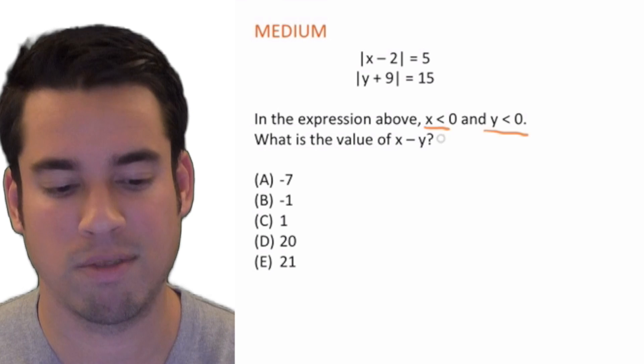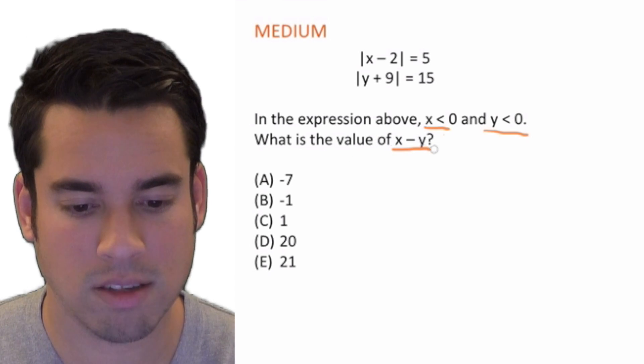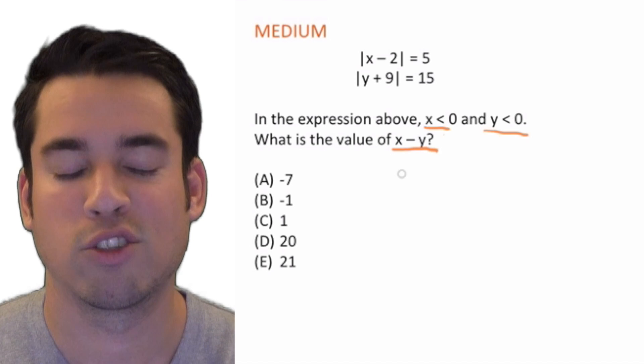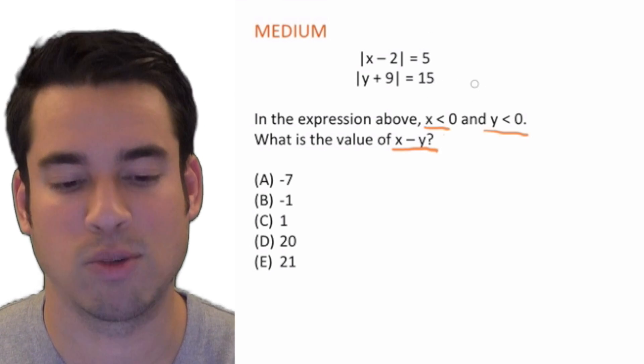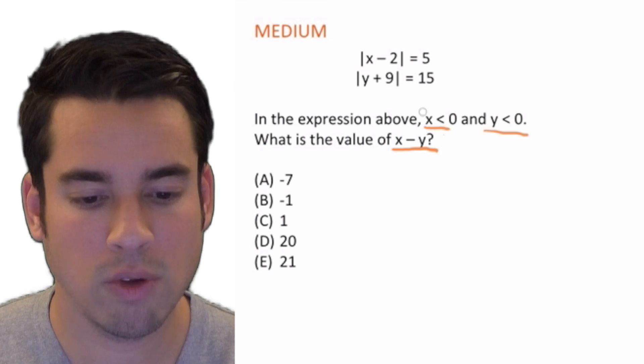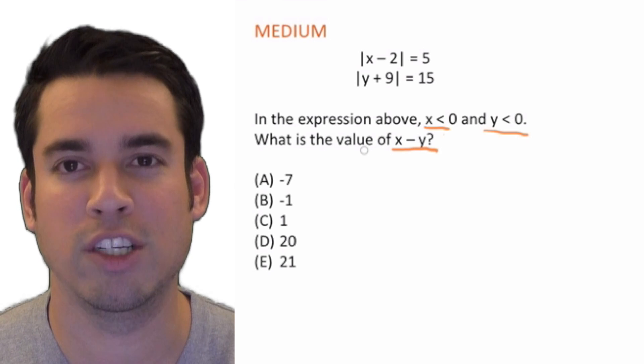So now we've got to figure out, based on these equations, what the difference is of x and y. First of all, there's two things to note: whenever you have an absolute value equation, you're going to get two values for each variable, but this is already telling you that we can limit those numbers by noting that x and y are both negative.